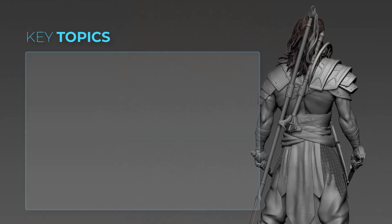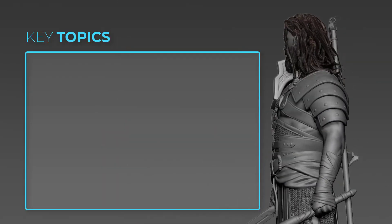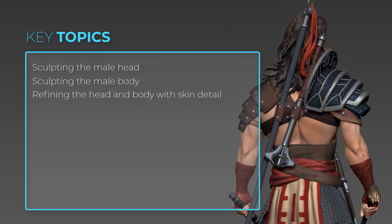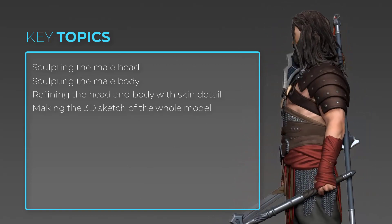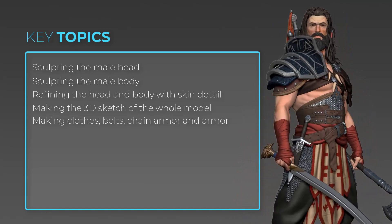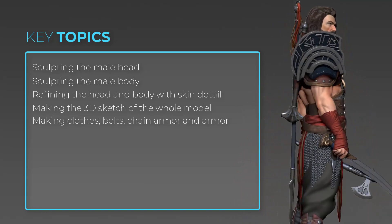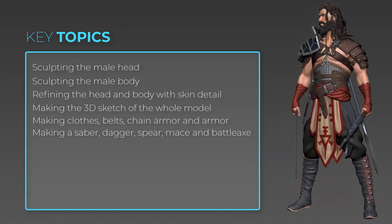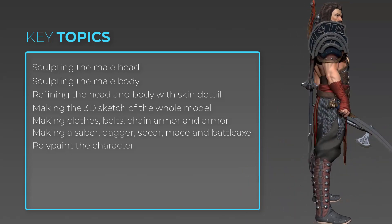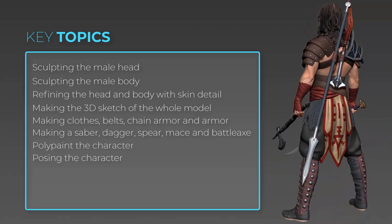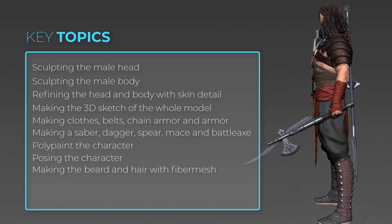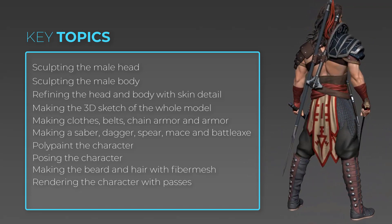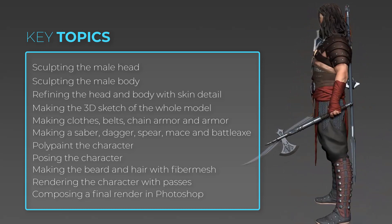In this course we will be covering topics such as sculpting the male head, sculpting the male body, refining the head and body with skin detail, making the 3D sketch of the whole model, making clothes, belts, chain armor and armor, making a saber, dagger, spear, mace and battleaxe, polypainting the character, posing the character, making the beard and hair with fiber mesh, and rendering the character with passes and composing a final render in Photoshop.